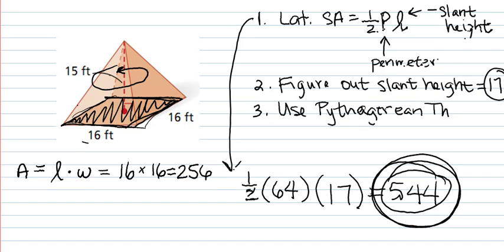So I'm taking the area of these four triangles that we have here, which is 544, and I'm adding the square at the bottom, which is 256,